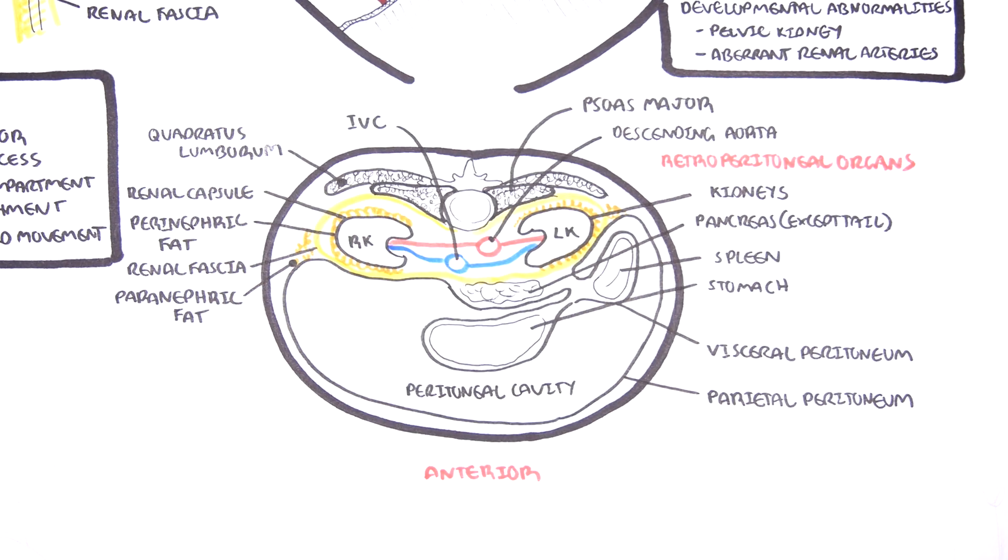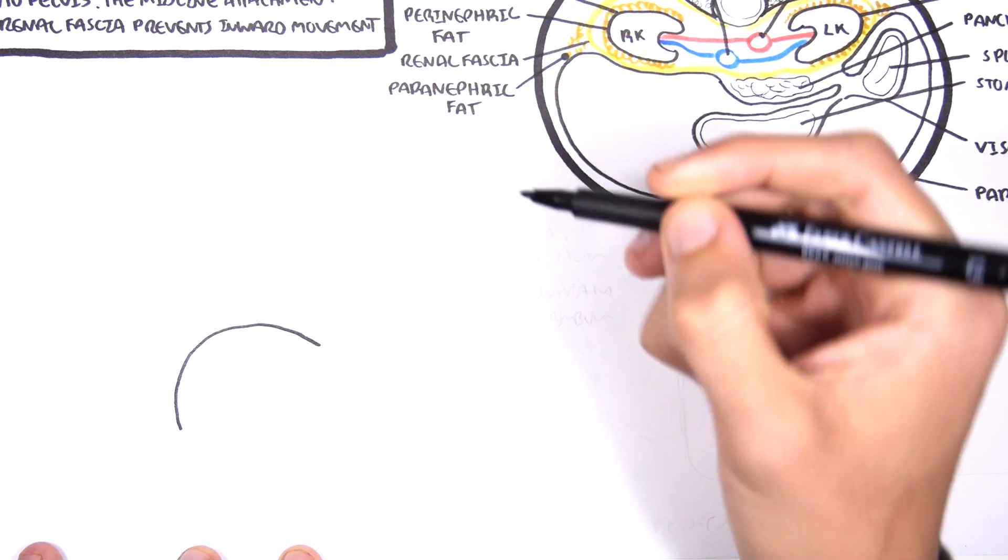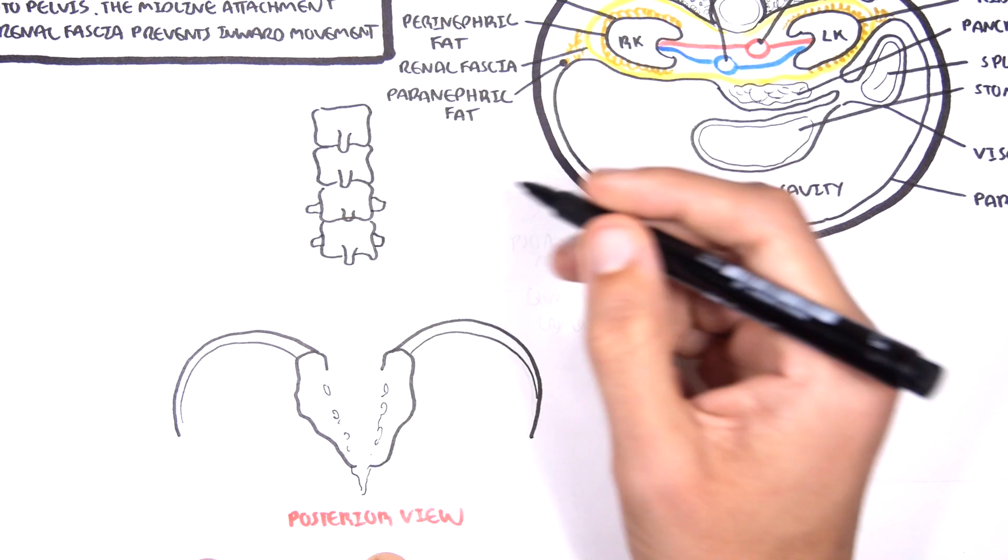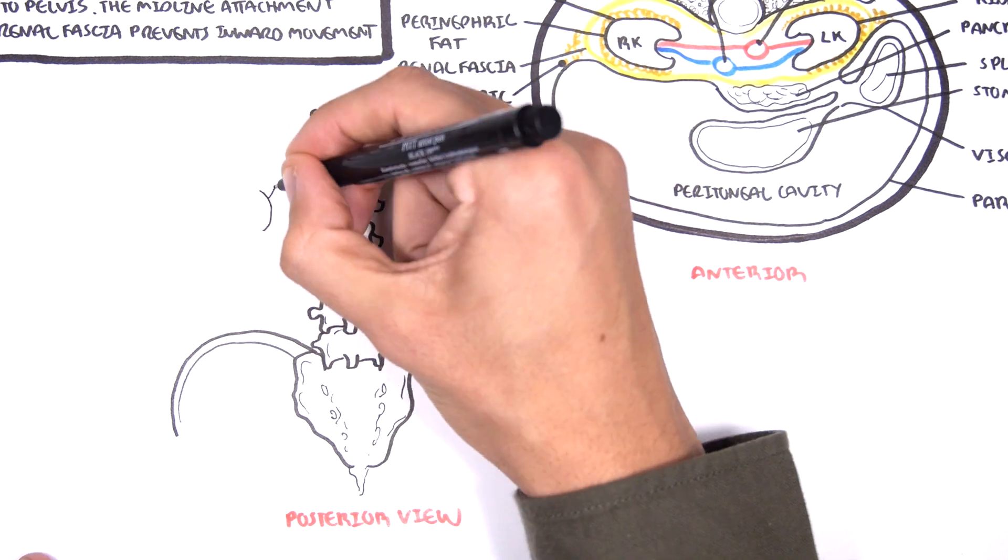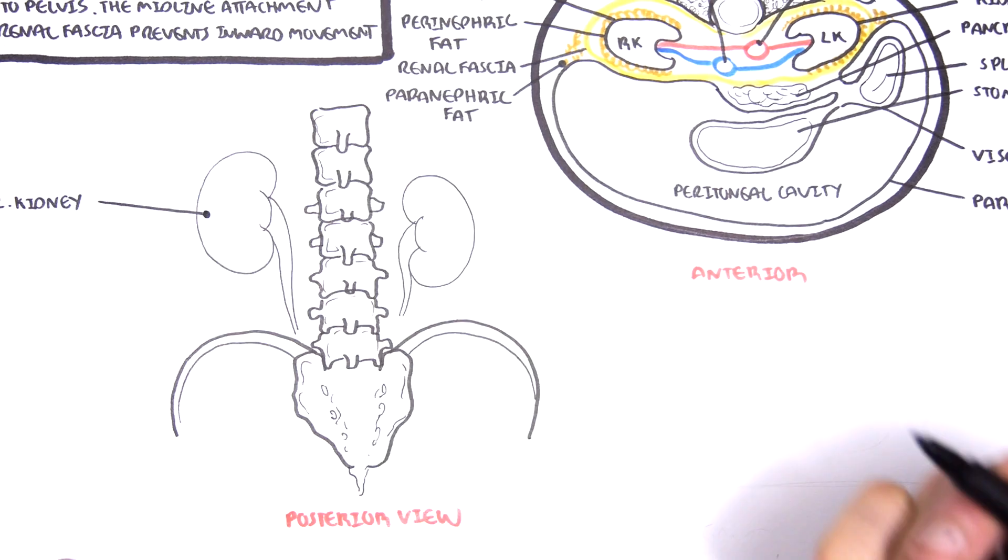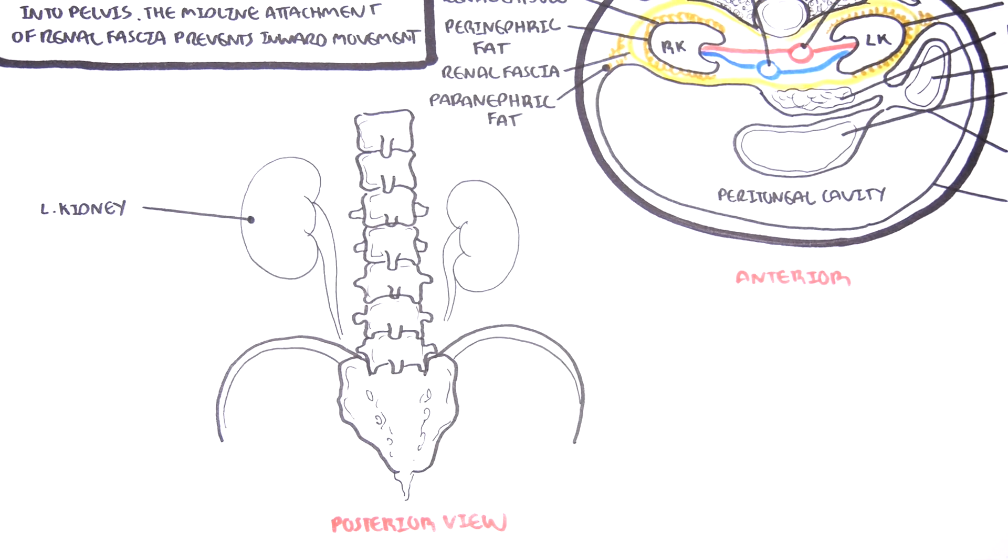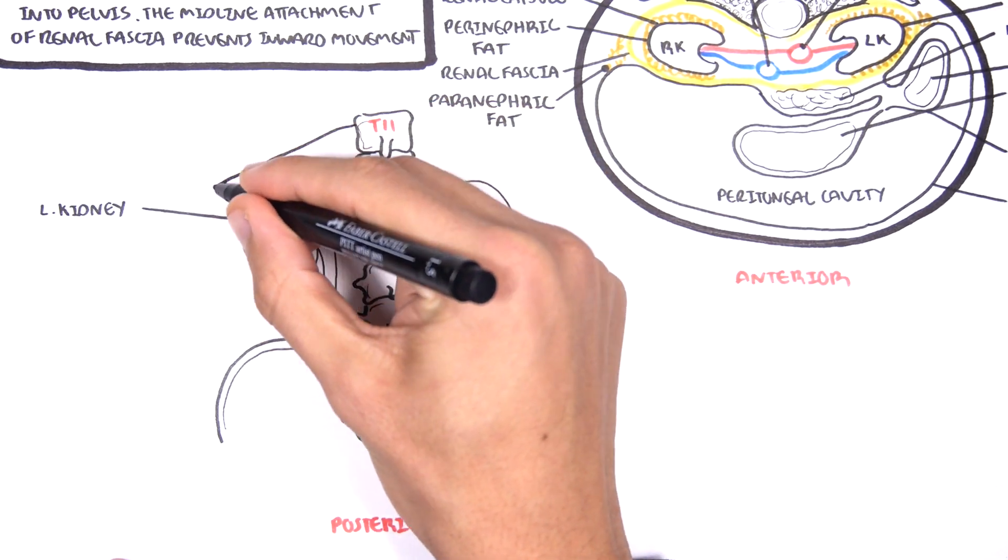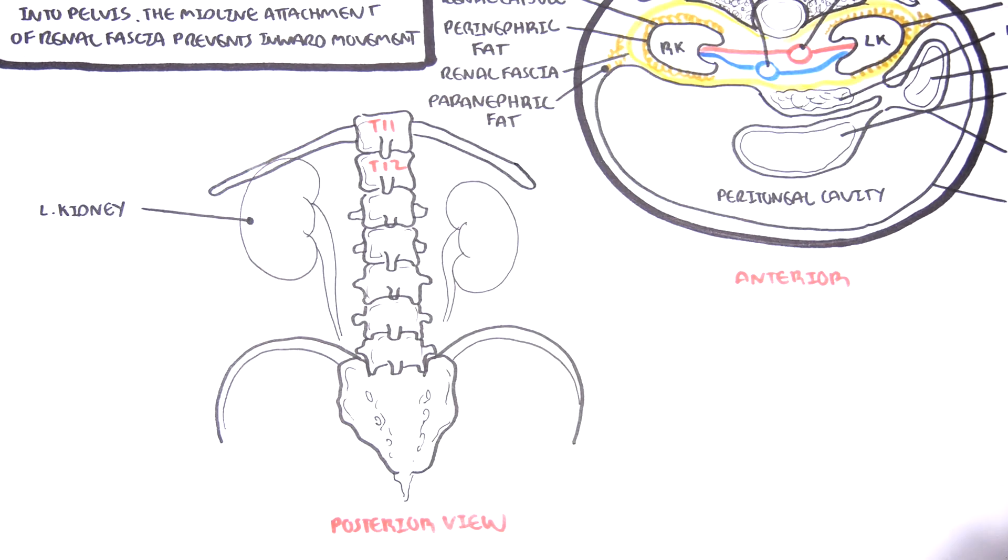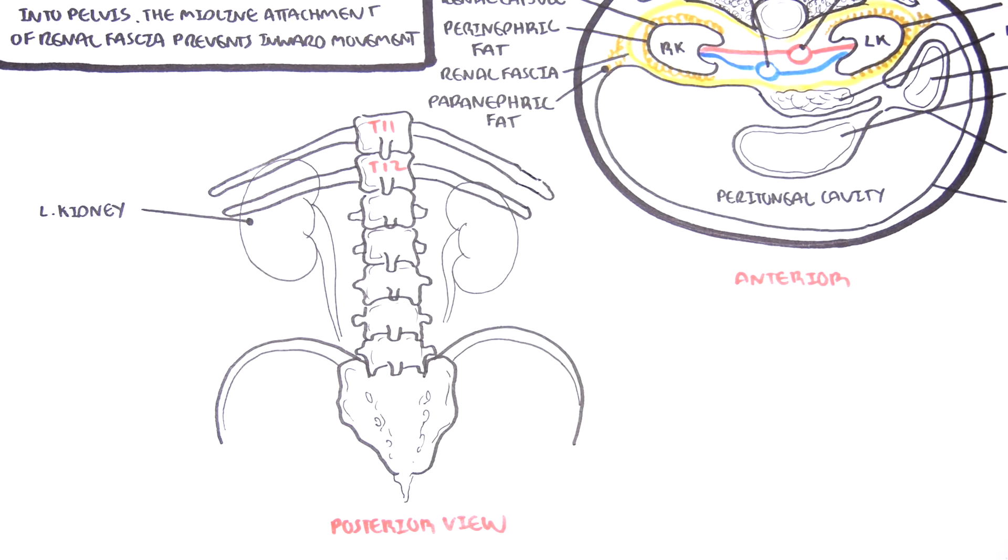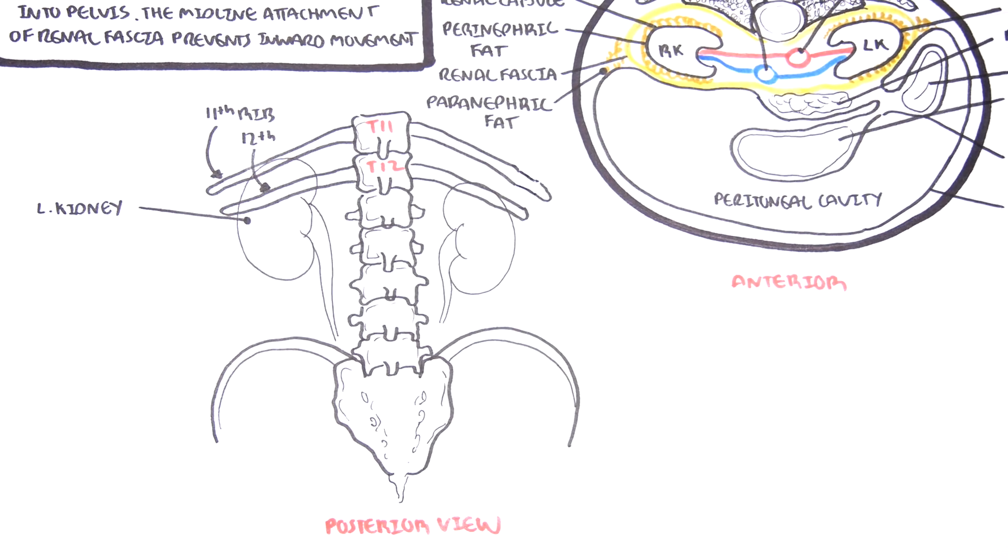Important muscles at the back here that attach to the vertebral body are the psoas major and the quadratus lumborum. Now let's take a look from a posterior view of the body, of the abdomen and trunk. Looking at the vertebral bones here, the sacrum and then you have the pelvis. To orientate yourself, the left kidney is here and sits slightly higher than the right kidney. The kidneys are protected partially by the ribs. The 11th and 12th rib is at the level of the left kidney and the 12th rib surrounds part of the right kidney.